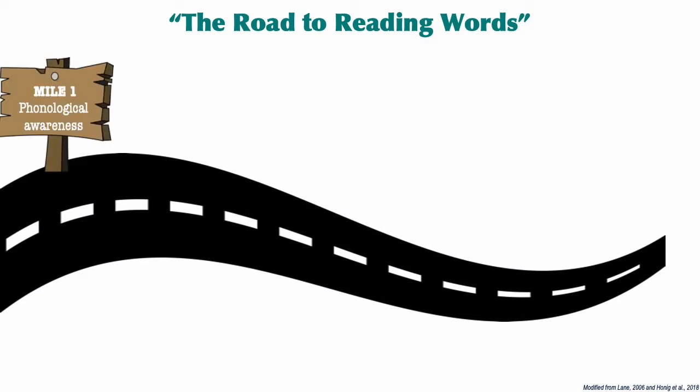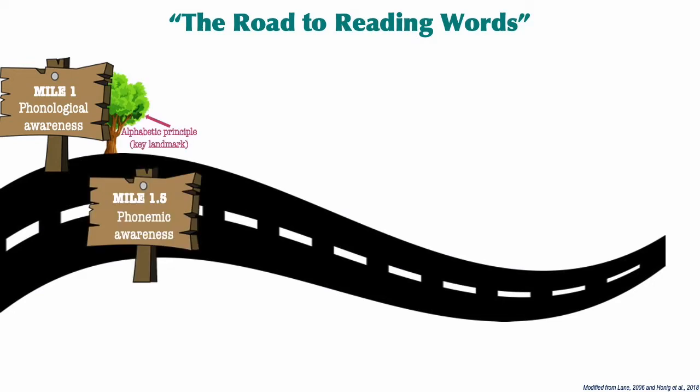The earliest set of skills that most students gain on this Road to Reading is phonological awareness. And then there is the alphabetic principle, which you can think of as a key landmark, like a tree, on this road model. Developing the alphabetic principle leads to understanding that words are made up of phonemes. That understanding is called phonemic awareness.